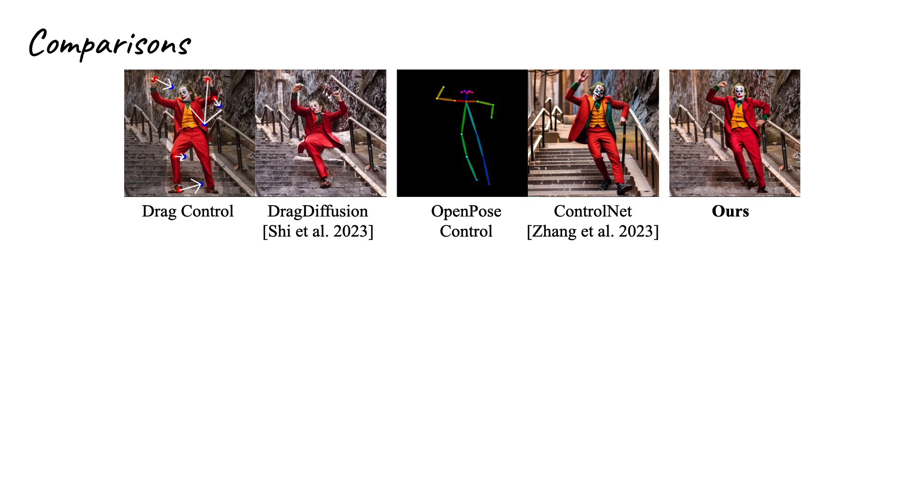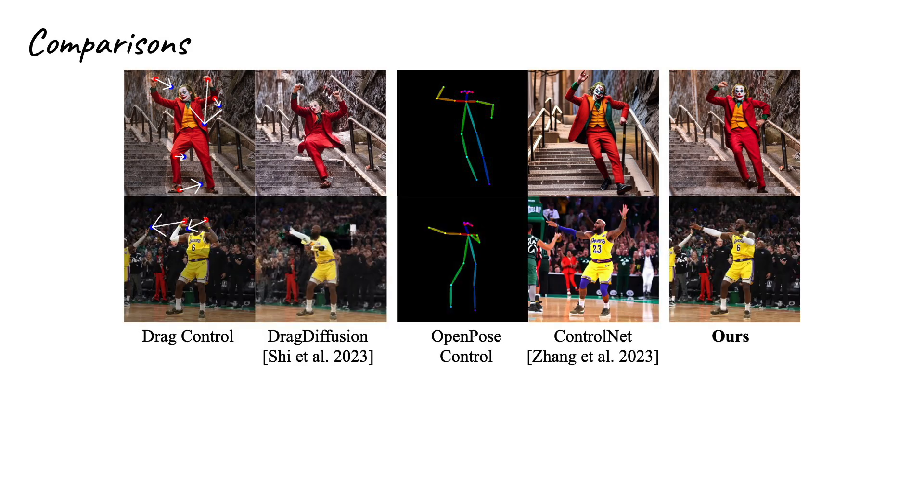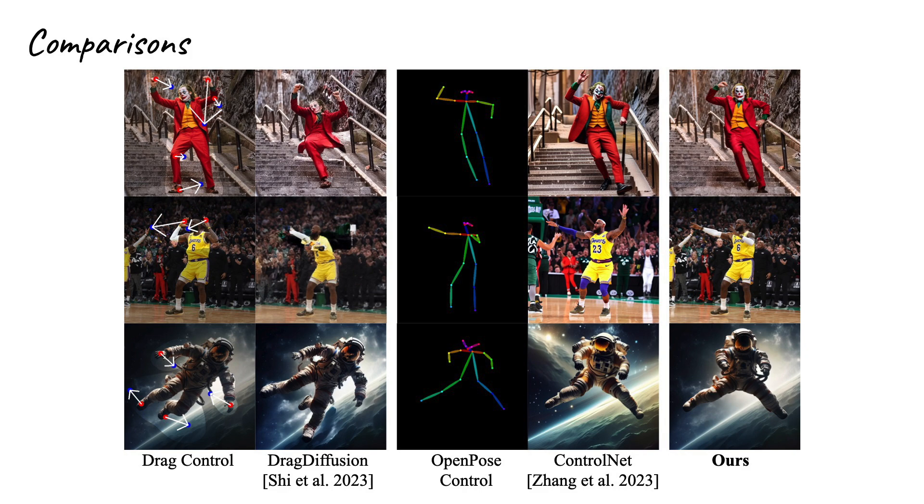We also compared our pose editing capabilities with drag diffusion and ControlNet. On the left, the drag control is displayed where red points indicate the source and blue points represent the target. Drag diffusion's results are in the second column. ControlNet's outcomes, using OpenPose as input, are in the fourth column. Our results are showcased on the right side. This comparison reveals that these methods encounter difficulties with extensive and complex pose modifications.